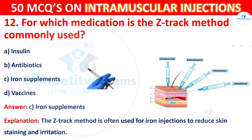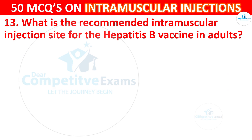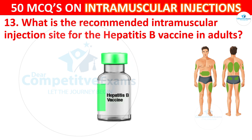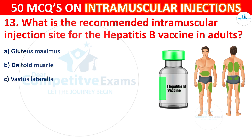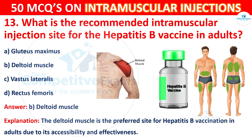Question 13: What is the recommended intramuscular injection site for the Hepatitis B vaccine in adults? Options are: gluteus maximus, deltoid muscle, vastus lateralis, or rectus femoris. The correct answer is B, deltoid muscle. The deltoid muscle is the preferred site for Hepatitis B vaccination in adults due to its accessibility and effectiveness.